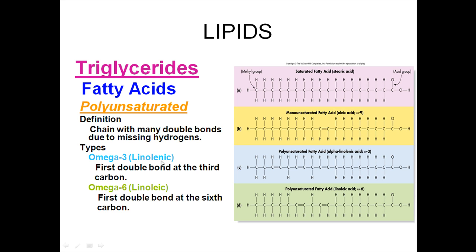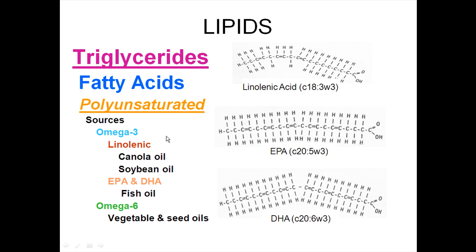These are essential fatty acids. Linolenic acid is omega-3 and linoleic acid is omega-6. Foods high in omega-3, specifically linolenic acid, include canola oil and soybean oils. You've probably heard about omega-3s in advertisements for fish oil. Fish oils also have omega-3s, but they're not linolenic acid — they're called EPA or DHA. This is what you'd look for when purchasing fish oil pills.